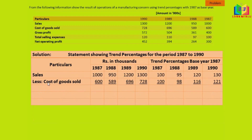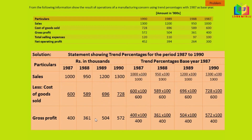If we subtract cost of goods sold from sales, we will get gross profit. The same way we have to find out the percentage for gross profit too. For 1987, current year and base year are the same into 100. For 1988, this is the current year and this is the base into 100. For 1989, 504 is the current year and 400 is the base year into 100. For 1990, 572 divided by 400 — that is the base — into 100.